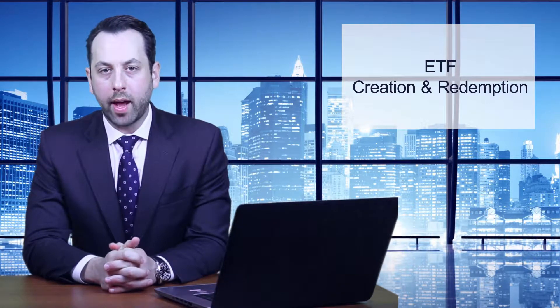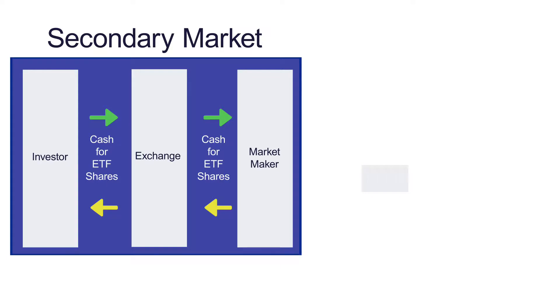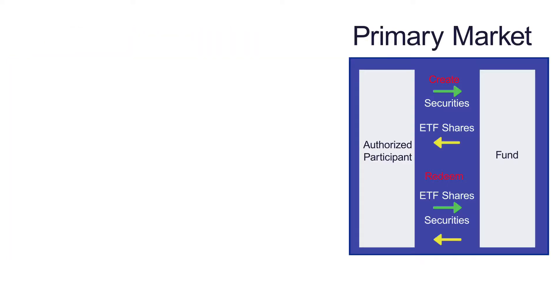Let's talk about creation and redemption — the technology benefit of ETFs and how assets move in and out of the fund. As shown in the two charts, there's the secondary market and the primary market. All investors are going to transact in the secondary market, and creations and redemptions are going to happen in the primary market.